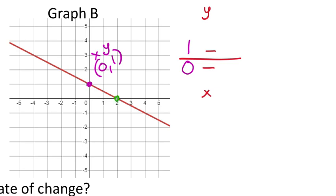You have several points to choose from. You can use two that are closest or two that are far away—it doesn't matter. I'm going to use these two. The green ordered pair: the x-value is 4, and the corresponding y-value is negative 1. So the ordered pair is (4, -1): x = 4 on the bottom, y = negative 1 on the top.